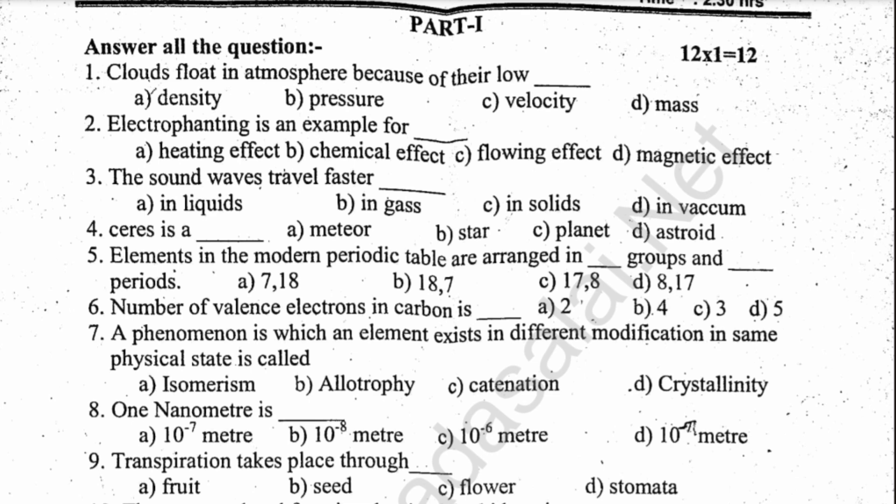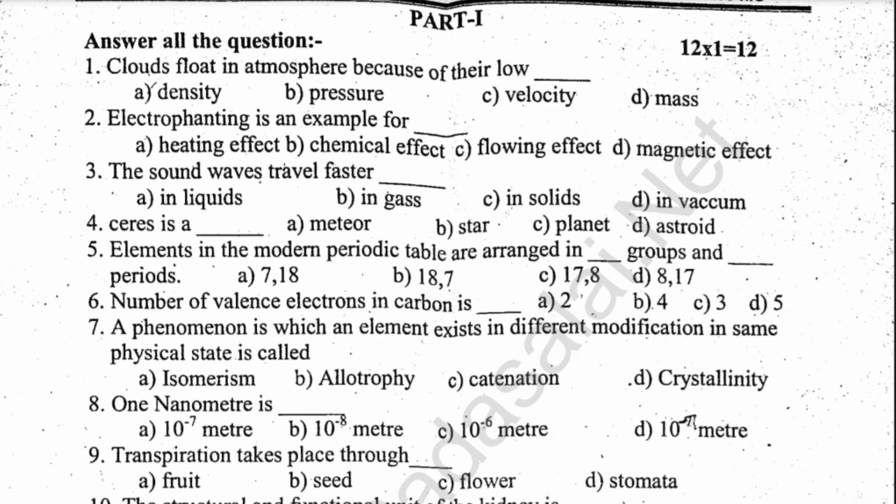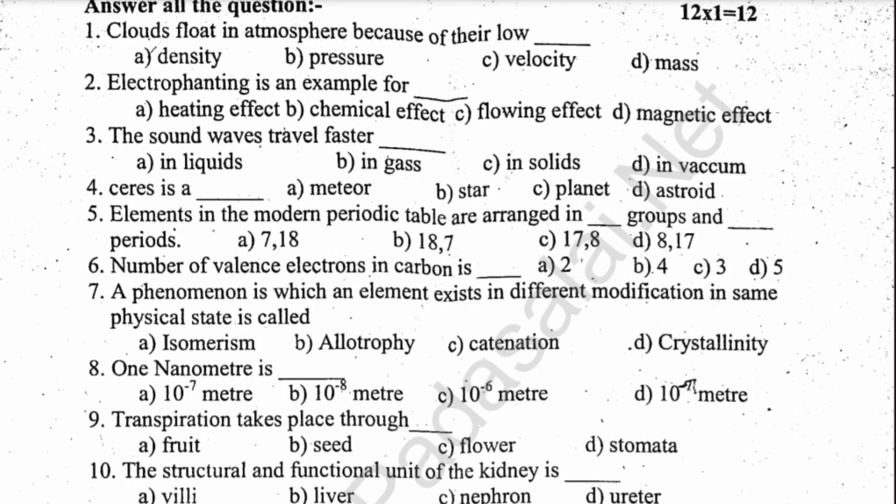One-mark questions include: Clouds float because of their low density. Electrostatic induction is an example for — . The sound waves travel faster in — . Series is a dash. Number of valence electrons in carbon is — . One nanometer is — . Transpiration takes place through — . The structural and functional unit of the kidney is — .